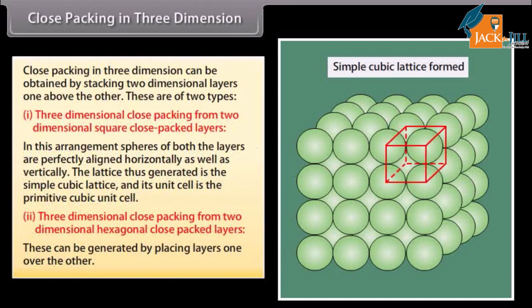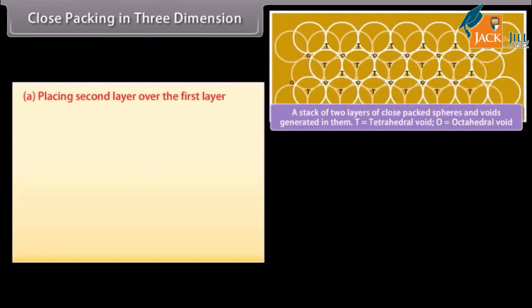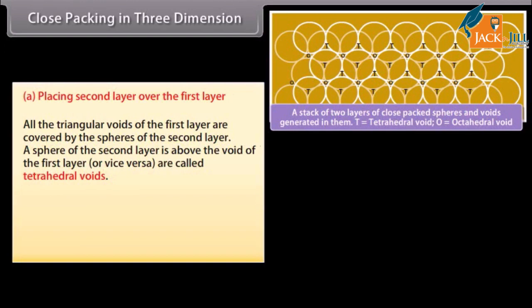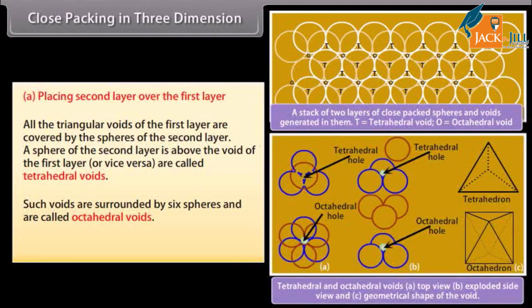Three-dimensional close packing from two-dimensional hexagonal close-packed layers can be generated by placing layers one over the other. All the triangular voids of the first layer are covered by the spheres of the second layer. A sphere of the second layer above the void of the first layer forms tetrahedral voids, while voids surrounded by six spheres are called octahedral voids.